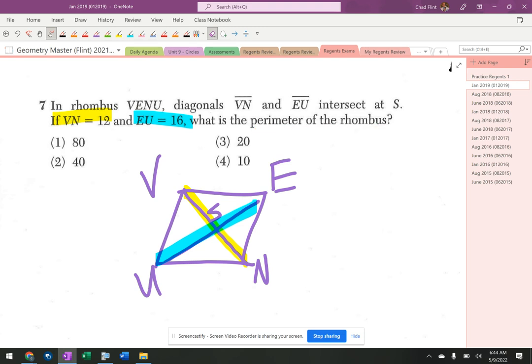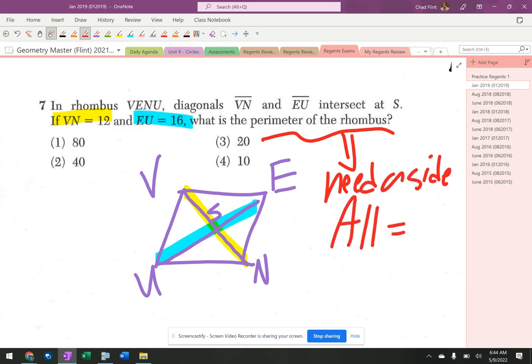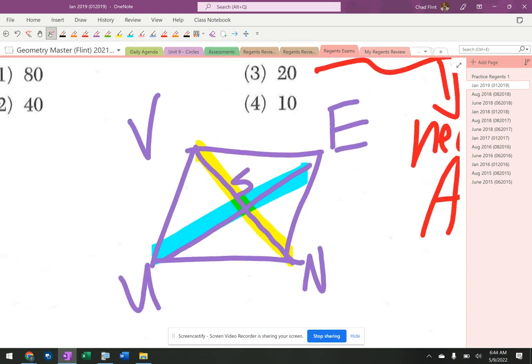On that a rhombus has perpendicular diagonals. I'm going to write down neither side because they're all equal. Fixated on the fact that rhombus has perpendicular diagonals and having you use Pythagorean theorem.